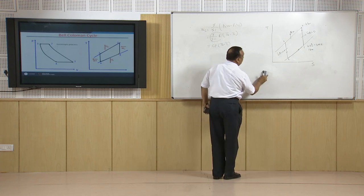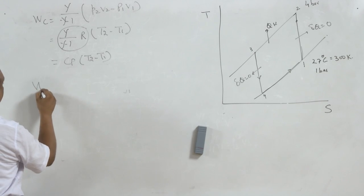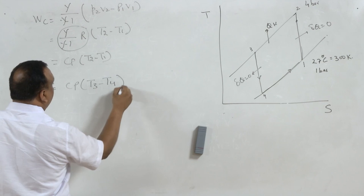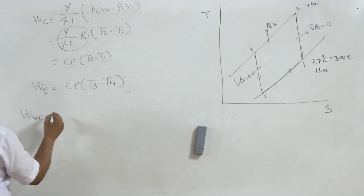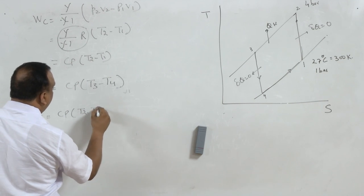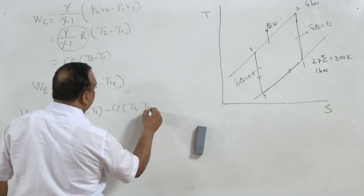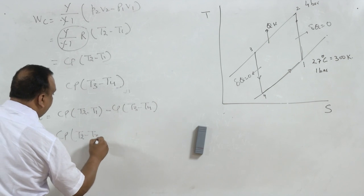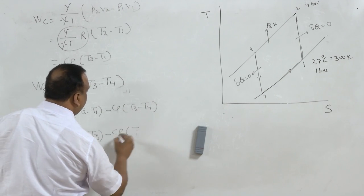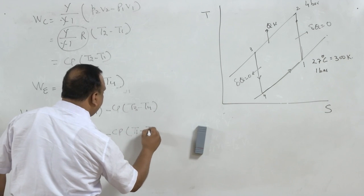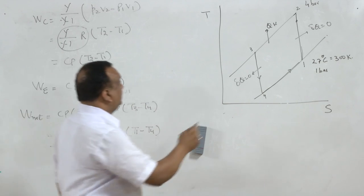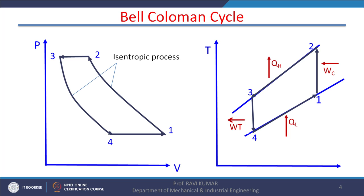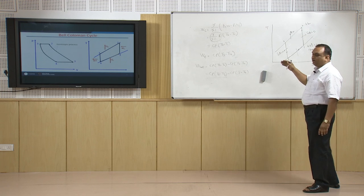Similarly, the work output during process 3 to 4, the work of the turbine or expander, equals Cp(T3 − T4). The net work is Cp(T2 − T1) − Cp(T3 − T4), or equivalently Cp(T2 − T3) − Cp(T1 − T4), which equals heat rejected minus heat taken in — the cyclic integral of heat transfer.